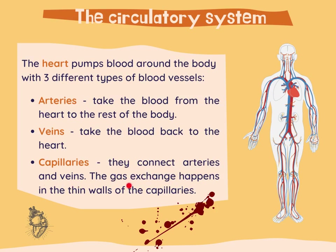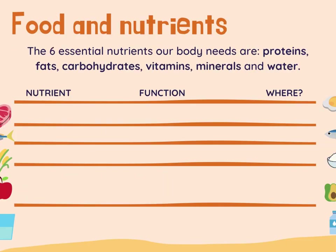The gas exchange happens in the thin walls of the capillaries. Now let's have a look at food and nutrients. There are six essential nutrients that our body needs: proteins, fats, carbohydrates, vitamins, minerals, and water.